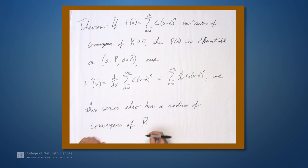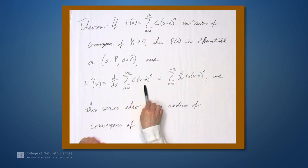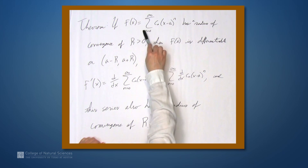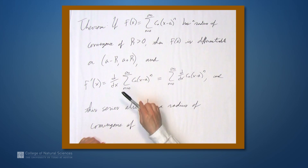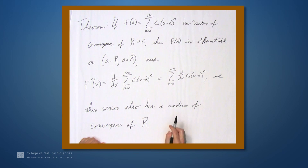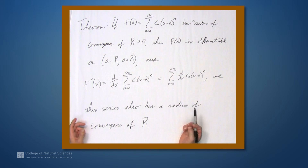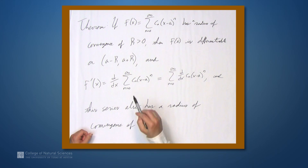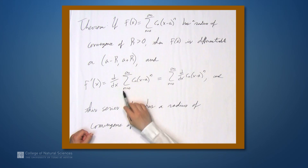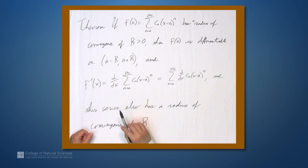We are not saying that the interval of convergence of the derivative series is the same as the interval of convergence of the original series, but we are saying that the radius of convergence of the original function and of its derivative is the same.